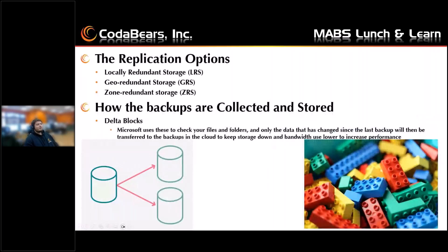MABS has three options for replication. There's locally redundant storage, which is the lowest cost option with basic protection against server rack and drive failures — it's better for non-critical scenarios. There's geo-redundant storage, or GRS, which is one intermediate option with failover capabilities in a secondary region, best for backup scenarios. And then there's zone redundant storage, the second intermediate option, which has protection against data center level failures and is better for high availability scenarios.